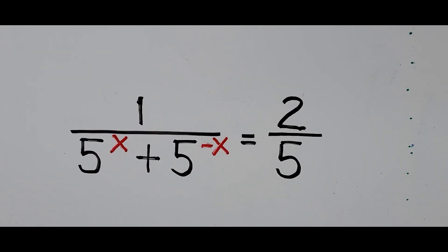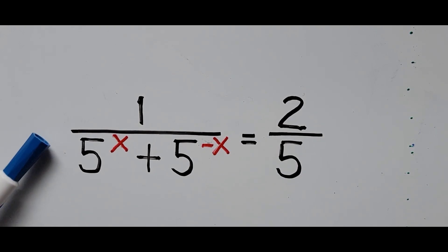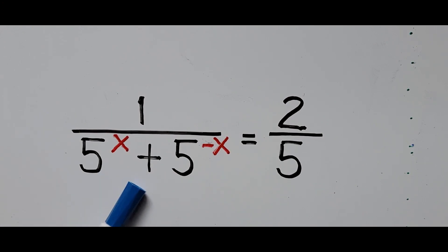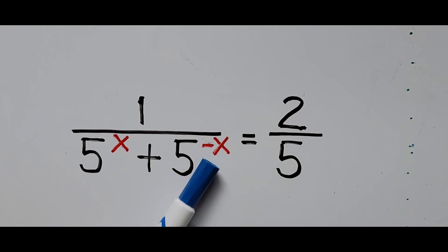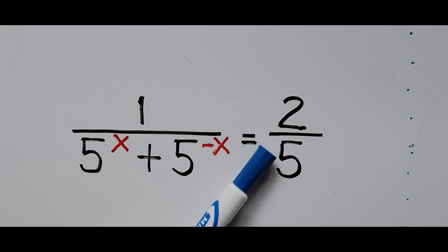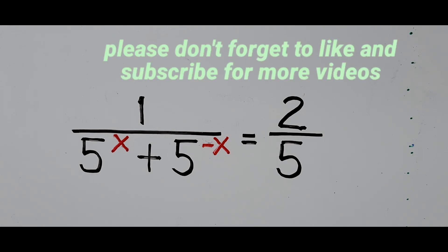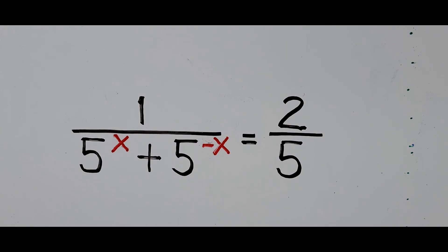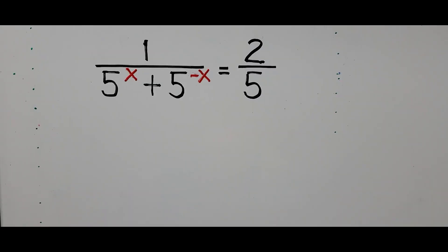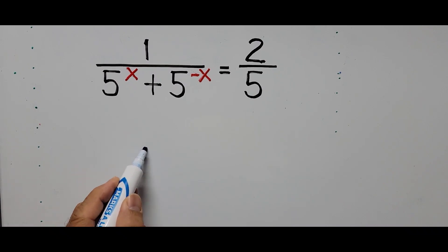Hello everyone, welcome to Kaciano Easy Math. This video is about solving an exponential equation: 1 over 5 to the power x plus 5 to the power negative x equals 2 fifths. We're trying to find the value of x. For those new to my channel, please don't forget to like and subscribe for more videos.